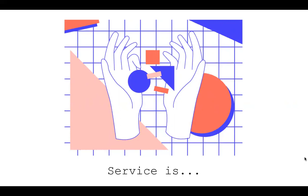In economics, there's a different term for what service is, and there are four key components. One is that it's perishable — it's gone after use. If you don't sell it today, it's not coming back. Think of a hotel room or a seat at a restaurant: if you don't sell that seat at the 7 p.m. time slot, you're not going to get that back. And it's intangible — it can't be touched or taken out of the shop. It happens at the interaction; it's often between two people.